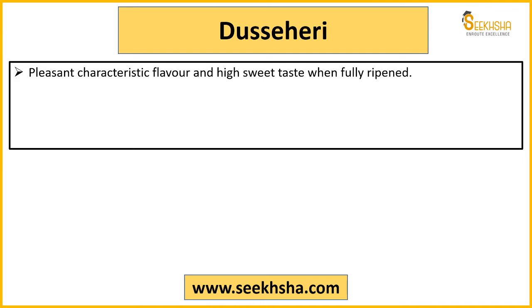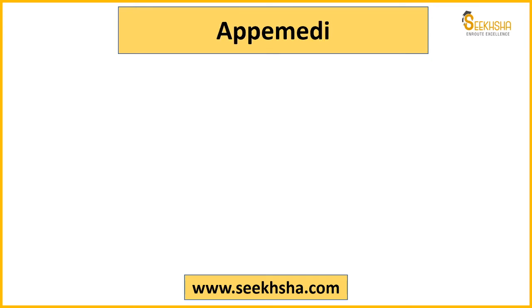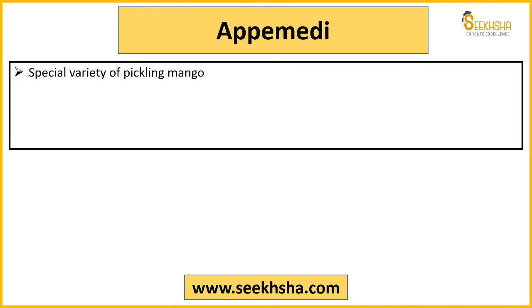For Dasheri, the flavor is good, the sweet taste is quite high when fully ripened, fiber content is low, and keeping quality is also good. Apimidhi is a special variety mainly used for making pickles - it is called a pickling mango. It is essentially used as raw/unripe mango for making achaar.